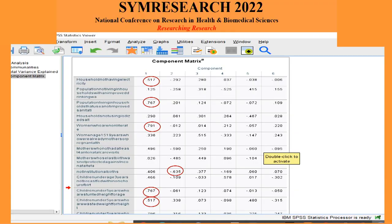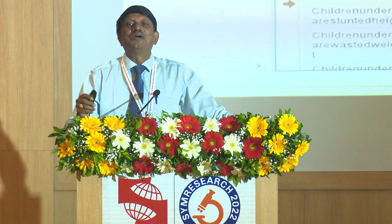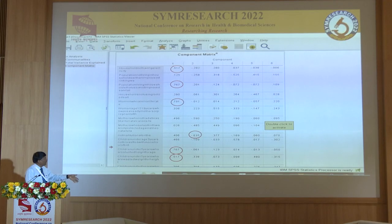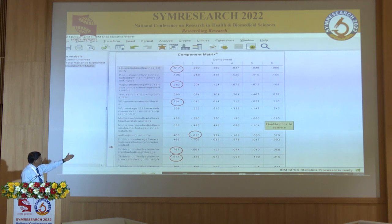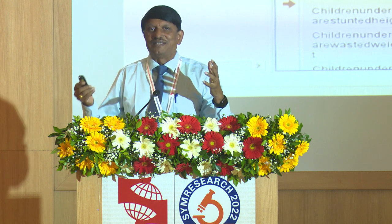I also want to tell you which variables are contributing to which components. The rule of thumb is: if the loading — eigenvalue component — is more than 0.5, I consider it; otherwise I leave it. This tells you which variables are contributing, which we call factors. In the first component, variables 1, 3, and 5 may be dominating; in the second component, variable 13 is dominating; in the fifth, variable 20 may dominate. That is the advantage of getting the factors and patterns.